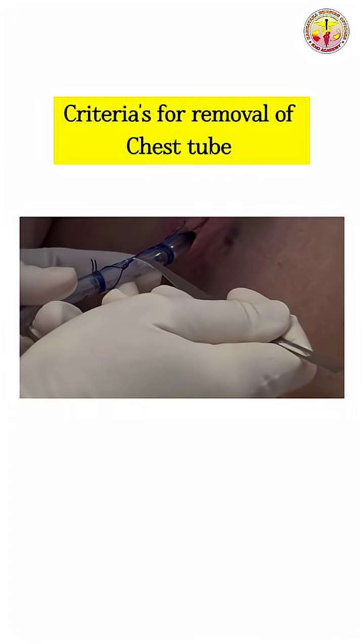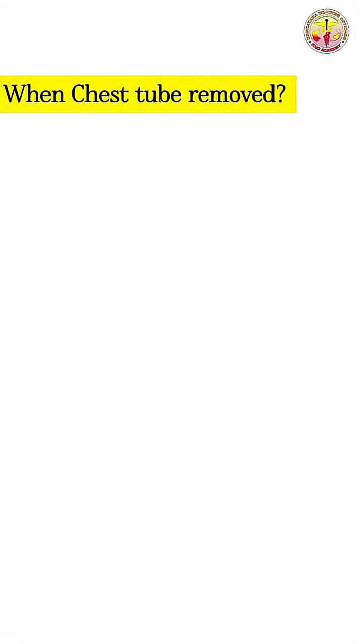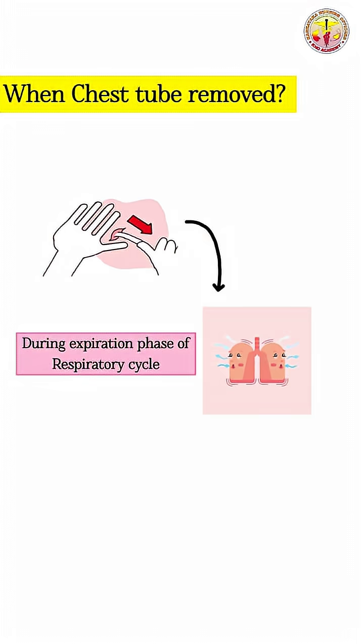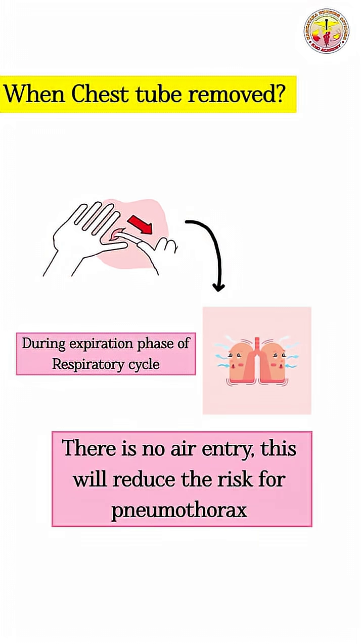Welcome back to our YouTube channel. Let's review the criteria for removal of a chest tube. Chest tubes are usually removed during expiration phase of the respiratory cycle, because during this phase there is no air entry, which prevents the risk of pneumothorax.